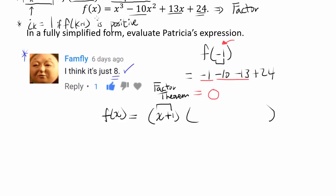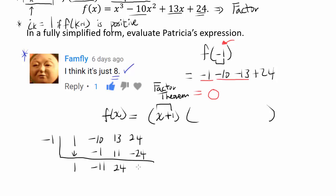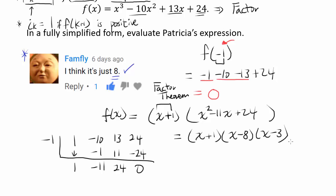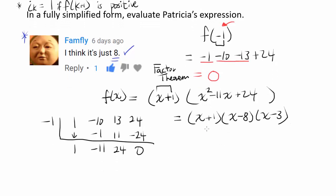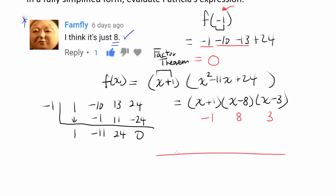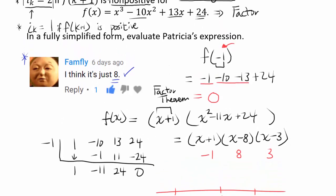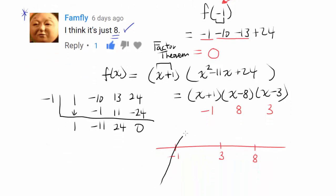To find the remaining factor, we use synthetic division, which gives x² - 11x + 24. This factors further as (x - 8)(x - 3). So the zeros of f(x) are -1, 3, and 8. As a cubic with a positive leading coefficient, f(x) crosses the x-axis at those three points with the expected end behavior.